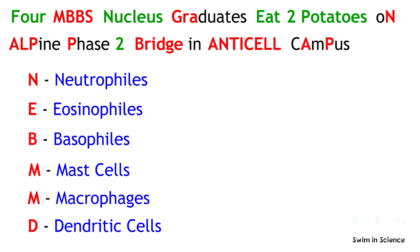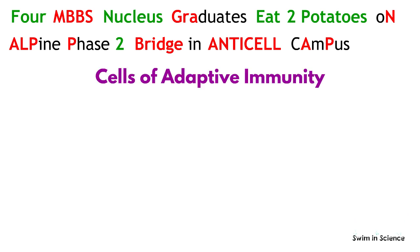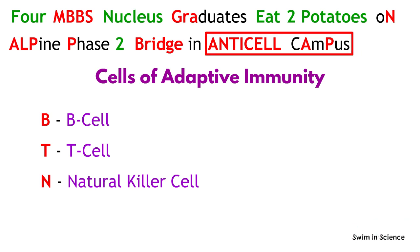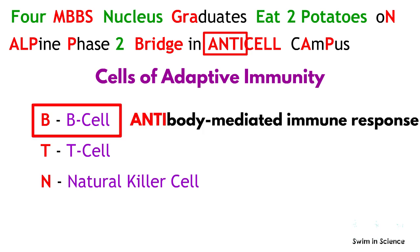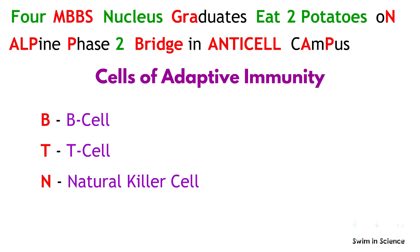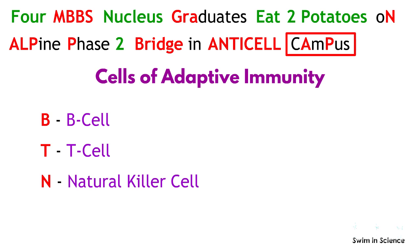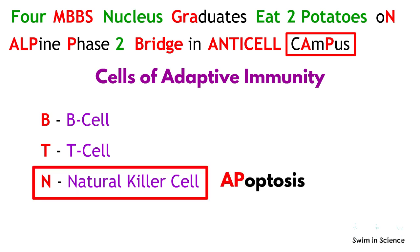This is all about the cells of innate immunity. Coming to the cells of adaptive immunity — that is, B cell, T cell, and natural killer cell — their main functions are indicated by the last two words: 'anti-cell campus.' The word 'anti' indicates that B cell is involved in antibody-mediated immune response; 'cell' indicates that T cell is involved in cell-mediated immune response; and 'campus' indicates the apoptosis function of natural killer cells.